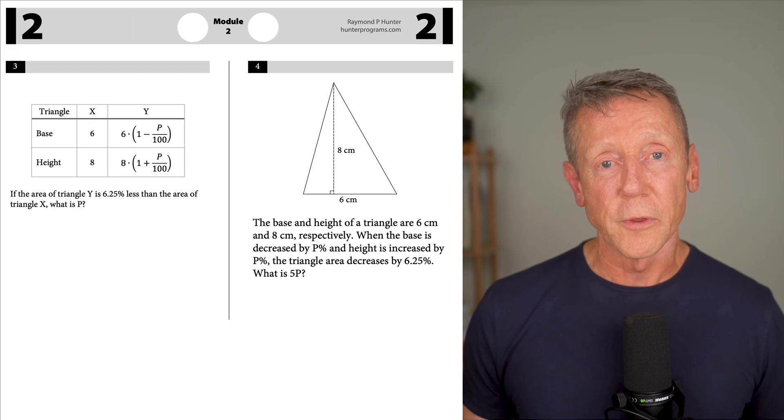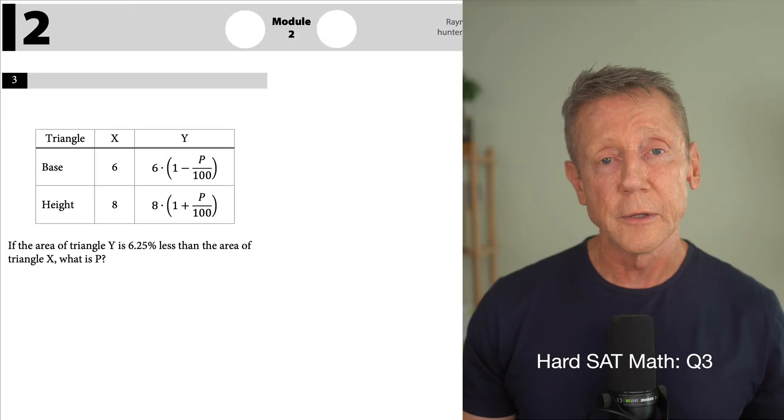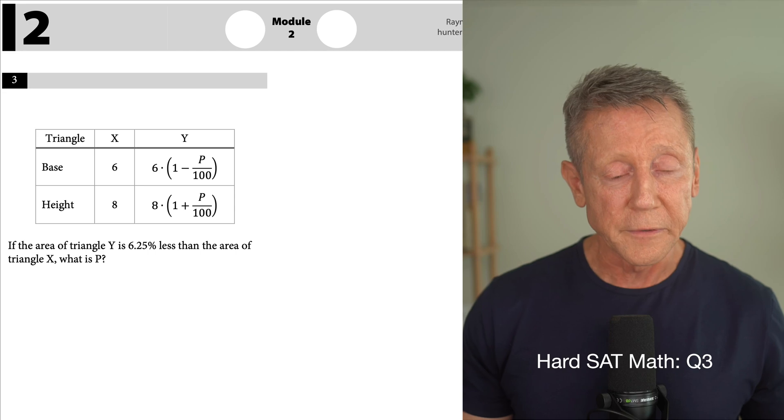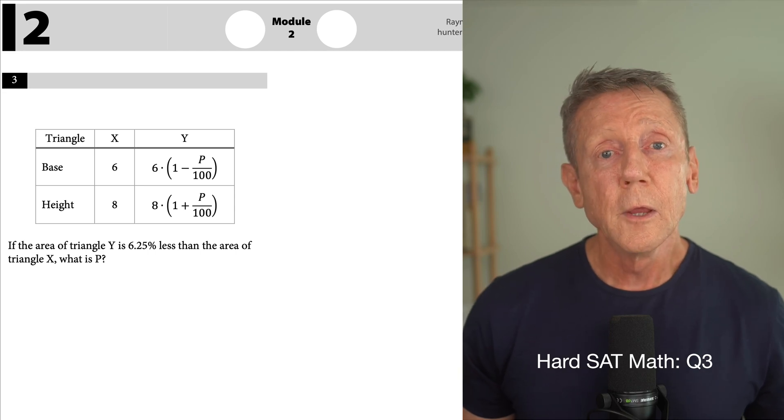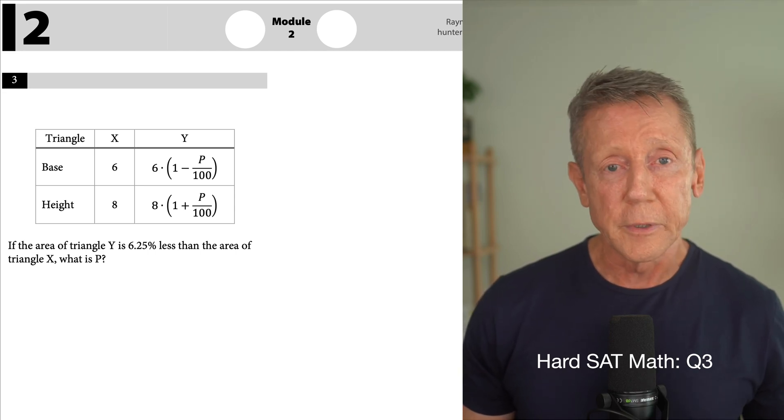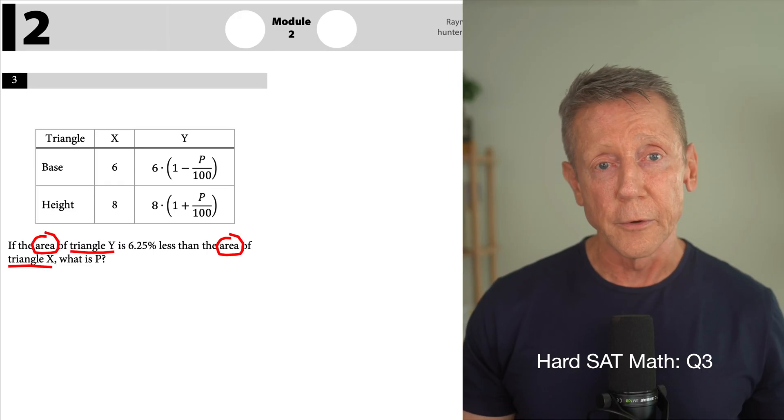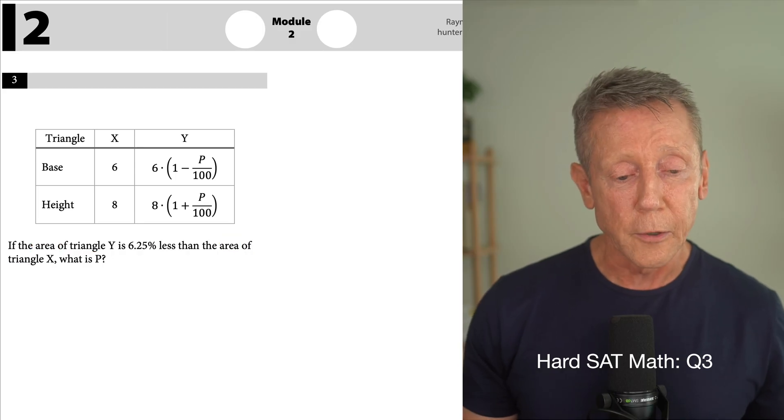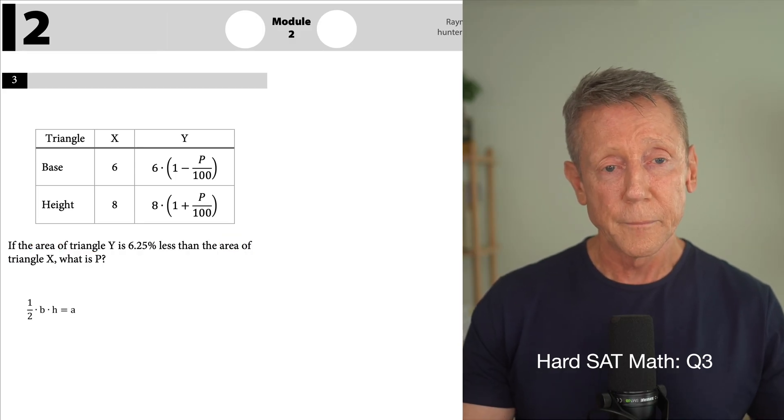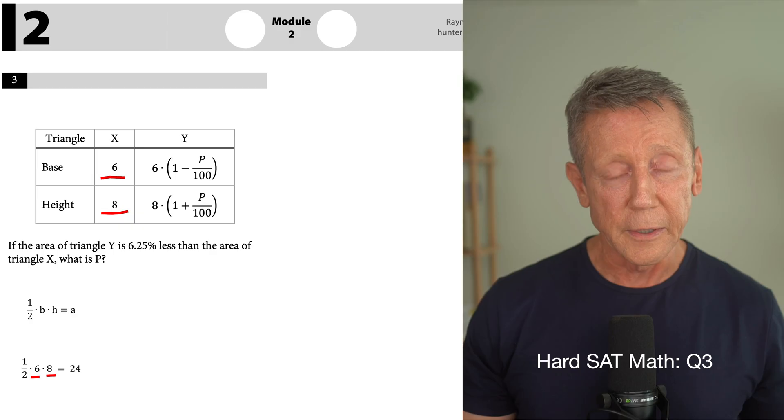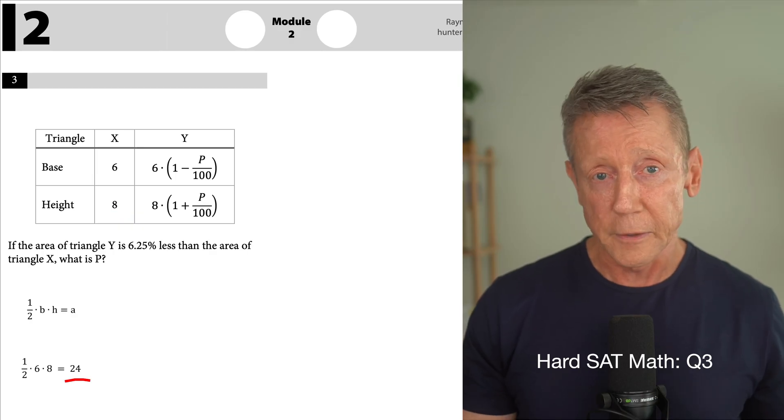The first thing I notice about question three is it's less abstract than question one. So, the SAT writers would consider this easier. The reason it's less abstract is the given information is organized into a table. I'm going to go ahead and quickly set this one up. We have two triangles that have areas that are related. So, I'm going to write the area formula for triangle X. And I'm going to load in my values. And I get A is 24. Okay. And that's kind of a dead end there.